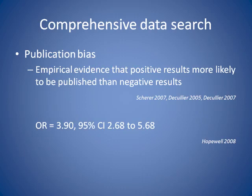There's empirical evidence to show that positive results or statistically significant results are more likely to be published than negative results. If we're only including published data within our reviews, we're going to get an overestimation of treatment effect. More recently, Sally Hopewell and colleagues have shown that the odds of a trial getting published are about four times more likely if they have statistically significant results.